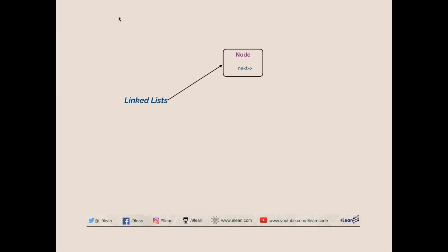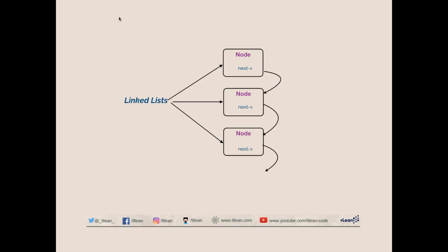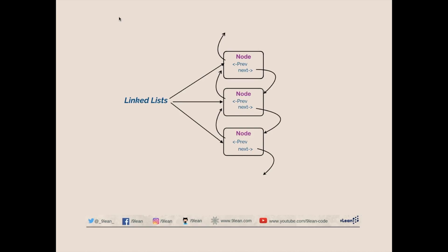To create a linked list, each element is called a node, which has a next pointer. When a node is aware about the next node in the collection, it is called a singly linked list. When it is also aware about the previous node, it is called a doubly linked list. An important thing is that user-defined types — such as structs, classes, or templates — must be created for a linked list. You cannot use built-in types like integer or character directly.